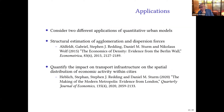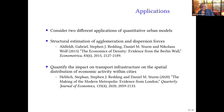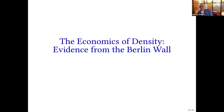I'm going to do two applications. First, the paper by Ahlfeldt, Redding, Sturm, and Wolf, where we use the exogenous division of Berlin after the end of the Second World War and its reunification after the fall of the Iron Curtain as an exogenous shock to estimate the strength of agglomeration and dispersion forces. Once you know those parameters, you can then do counterfactuals. Second, I'll briefly mention an application where we use these models to evaluate transport improvements, looking at the invention of the steam passenger railway and how it changed the organization of economic activity within London.